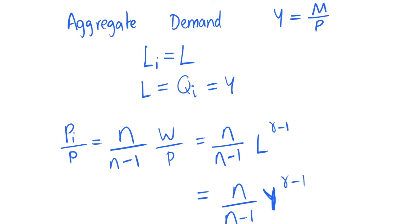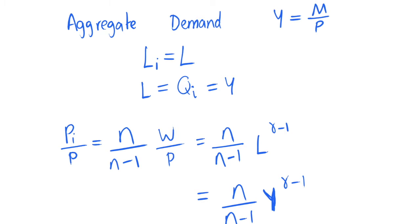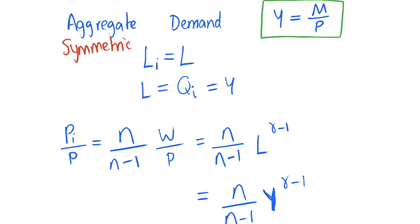We can now formulate an aggregate demand relationship using the quantity equation, which we derive as our aggregate demand relation from a cash-in-advance constraint where consumers must hold money to make transactions. With this aggregate demand function, we can start aggregating the representative firm and household maximization problems to the whole economy through a symmetric equilibrium.